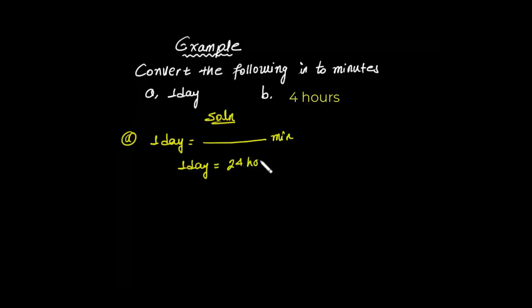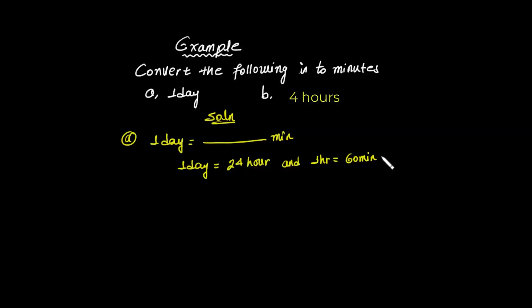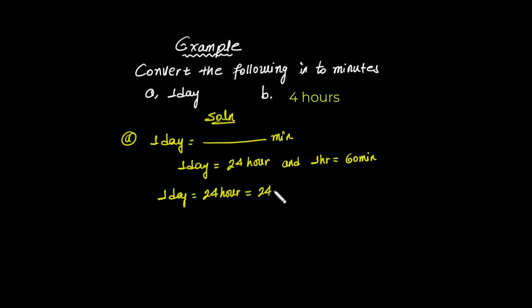One day has 24 hours. We know that one hour is equal to 60 minutes. One day is equal to 24 hours, which is equal to 24 times 60.